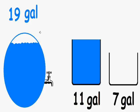Alright, so we had 19 gallons of water in the tank. We just took 4 gallons away. So 19 minus 4 is 15 gallons.